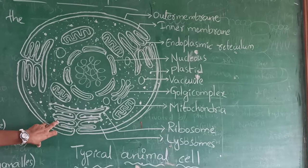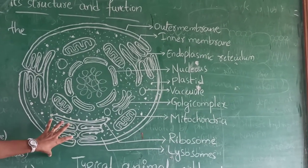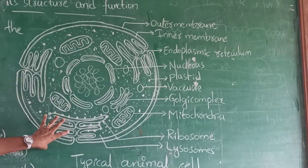Here, we have endoplasmic reticulum. In that endoplasmic reticulum, we have two types: rough endoplasmic reticulum and smooth endoplasmic reticulum.